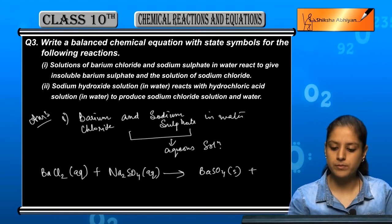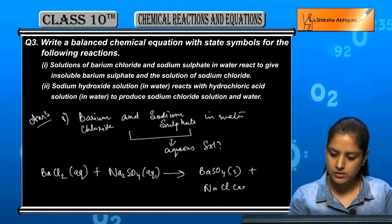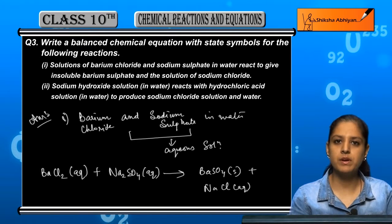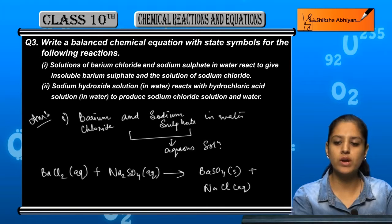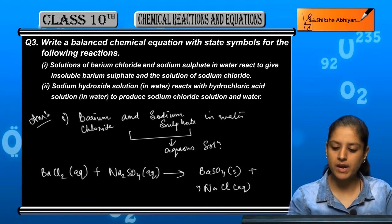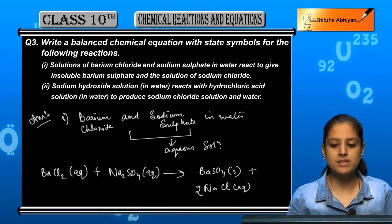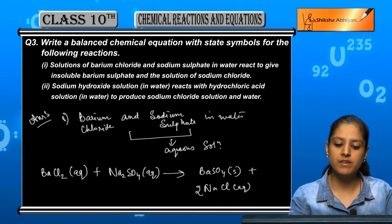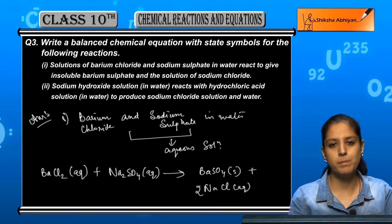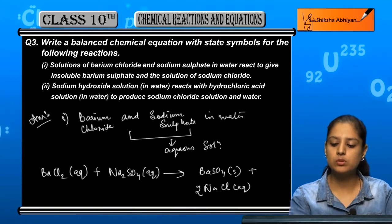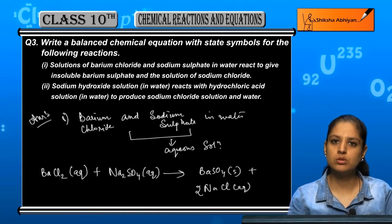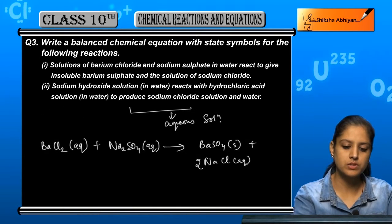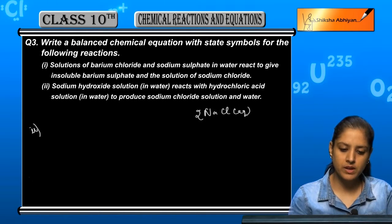The product is sodium chloride, NaCl, which is aqueous because it is a solution, plus insoluble barium sulphate as a solid. Now let us check if it is balanced: Ba is 1 on left and 1 on right, Cl is 2 on left and 2 on right balanced, Na is 2 on both sides, SO₄ is 1 on both sides. So ultimately it is a balanced chemical equation.